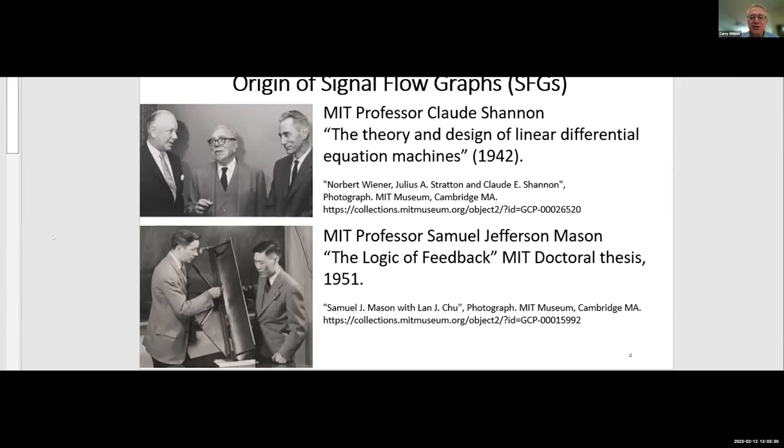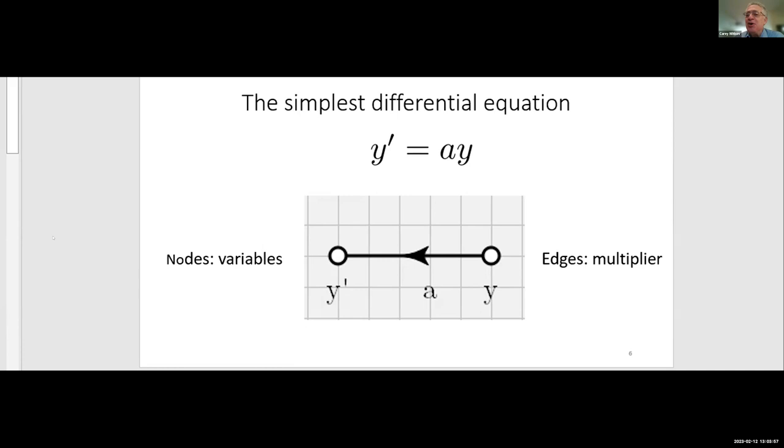So by way of a first example, signal flow graph with the simplest differential equation, where a rate of change is proportional to the function itself. And if we use for the nodes, the variables and the edges are the multipliers. So we can diagram that differential equation and just by itself, it's not terribly illuminating. But there's a second implied equation besides the differential equation. And that's the relation between the derivative and the variable. So if we use the D operator, which seems like is more popular in older books of using the linear differential operator, and then integration is the reverse D operator.